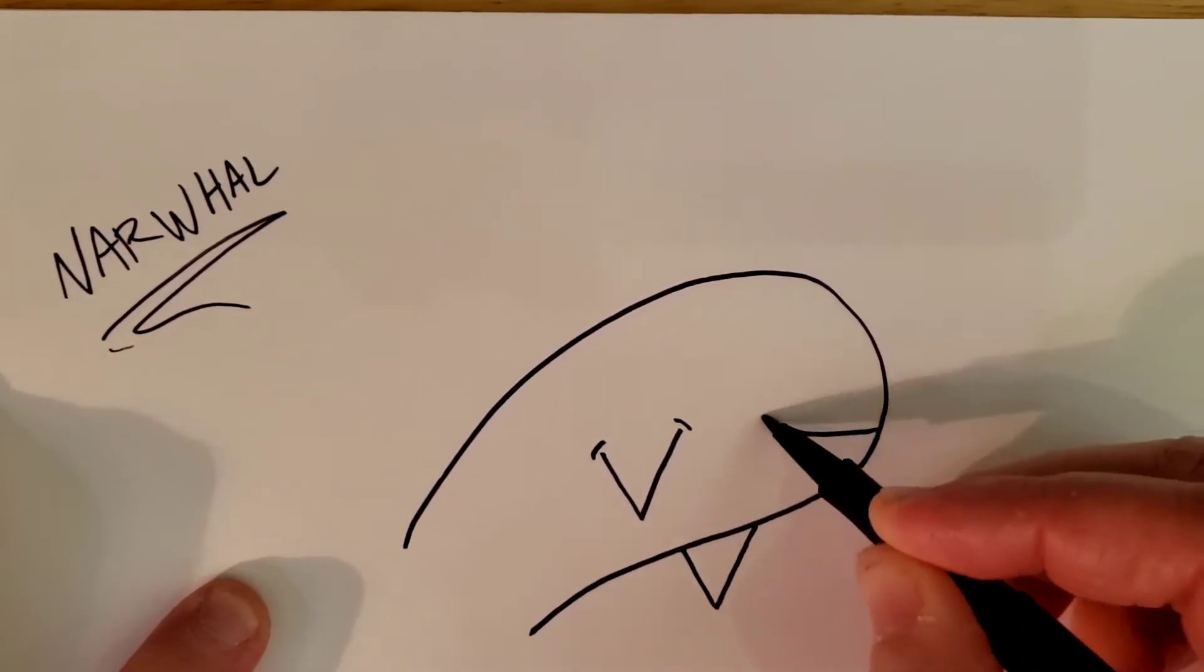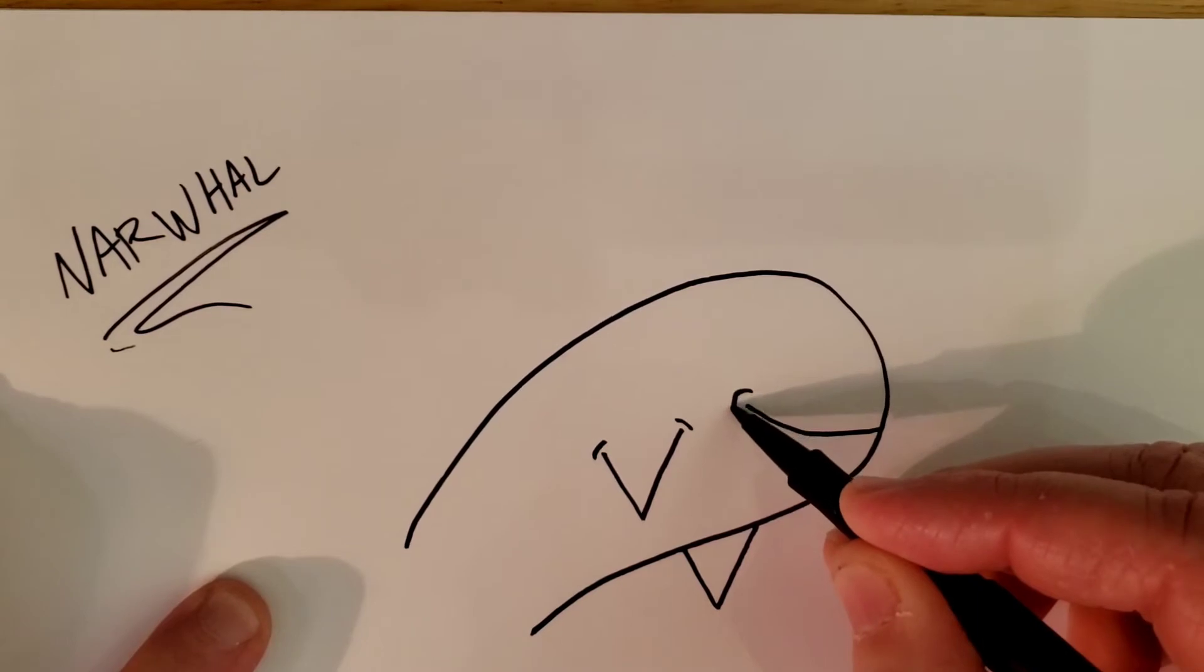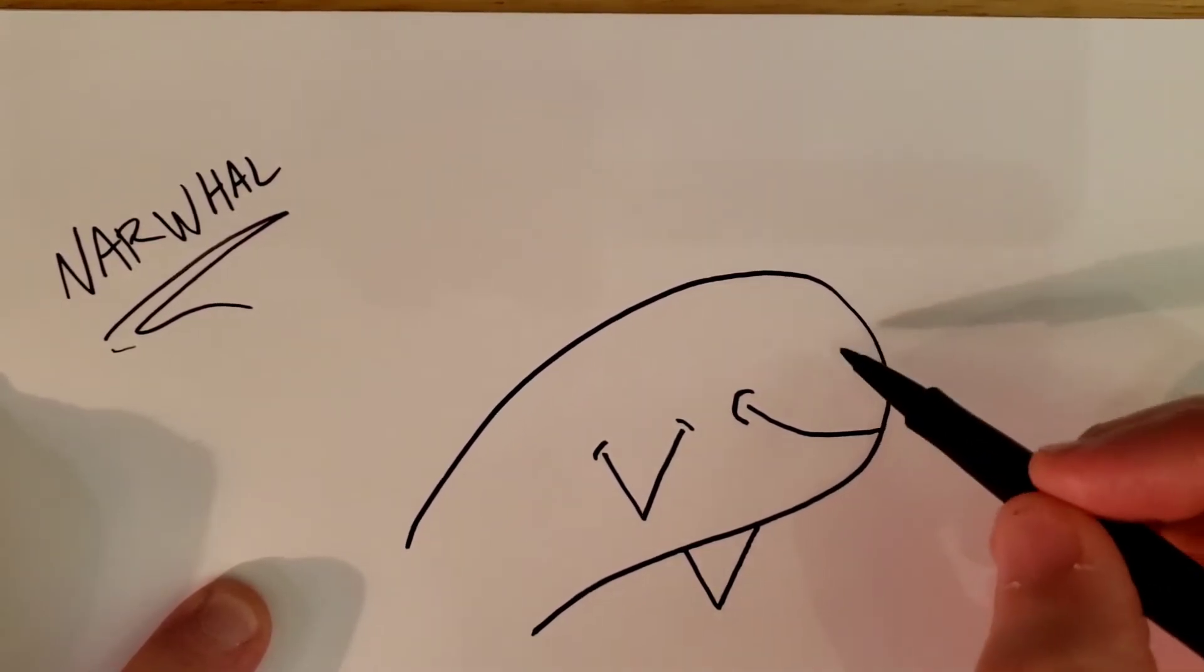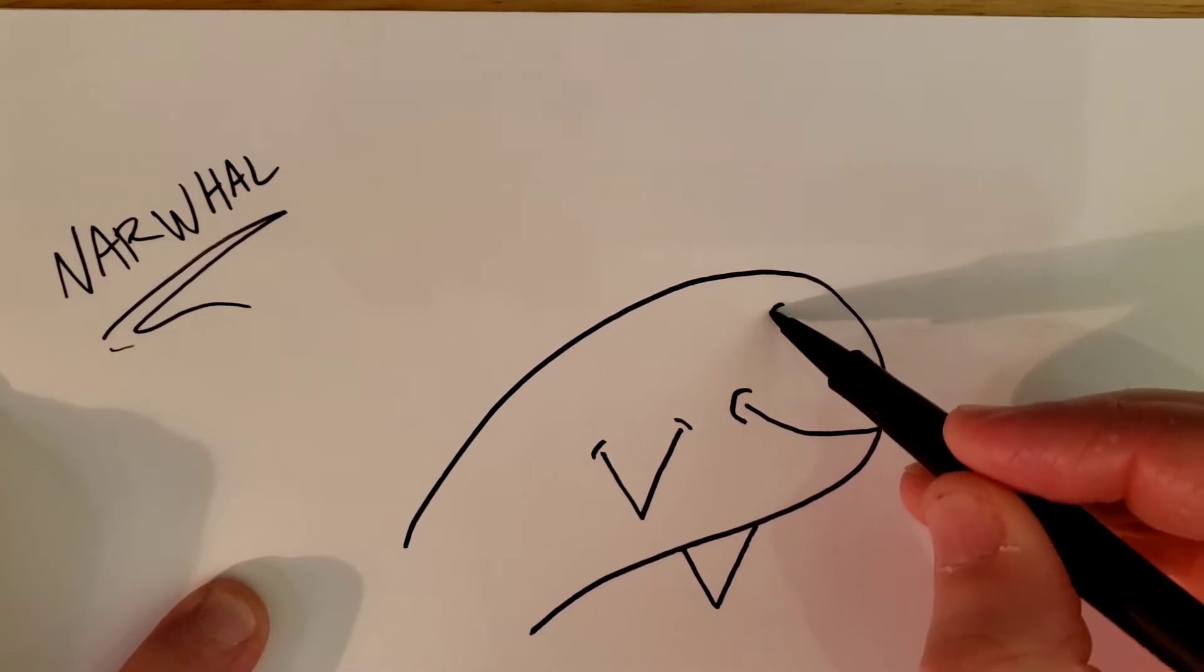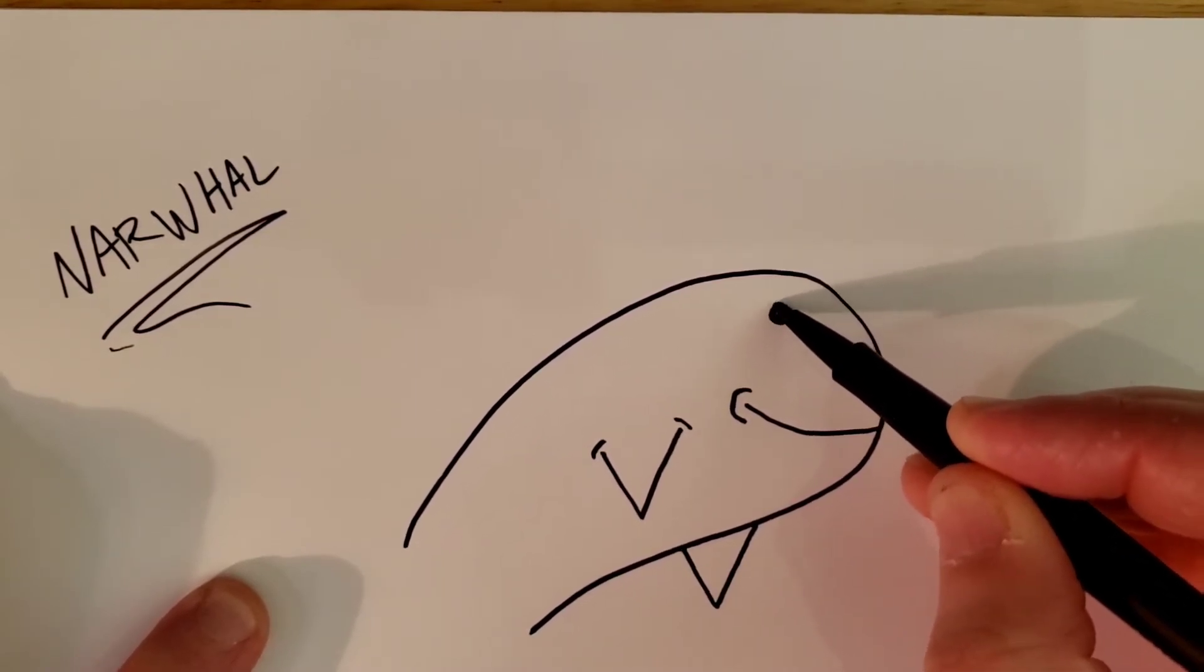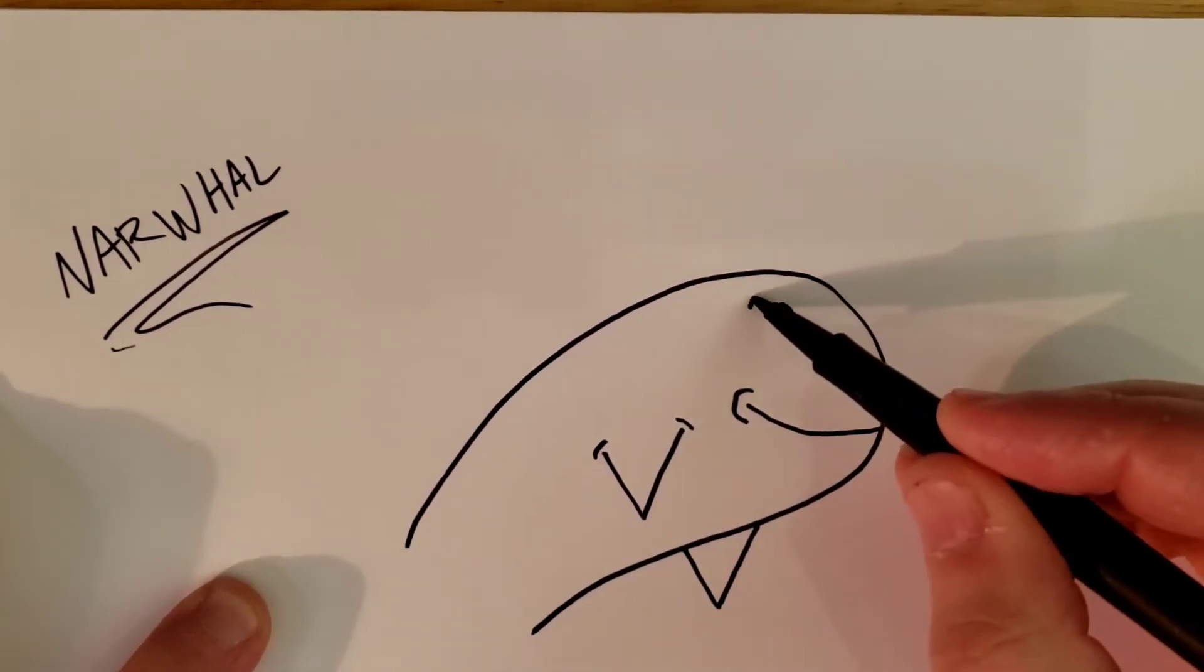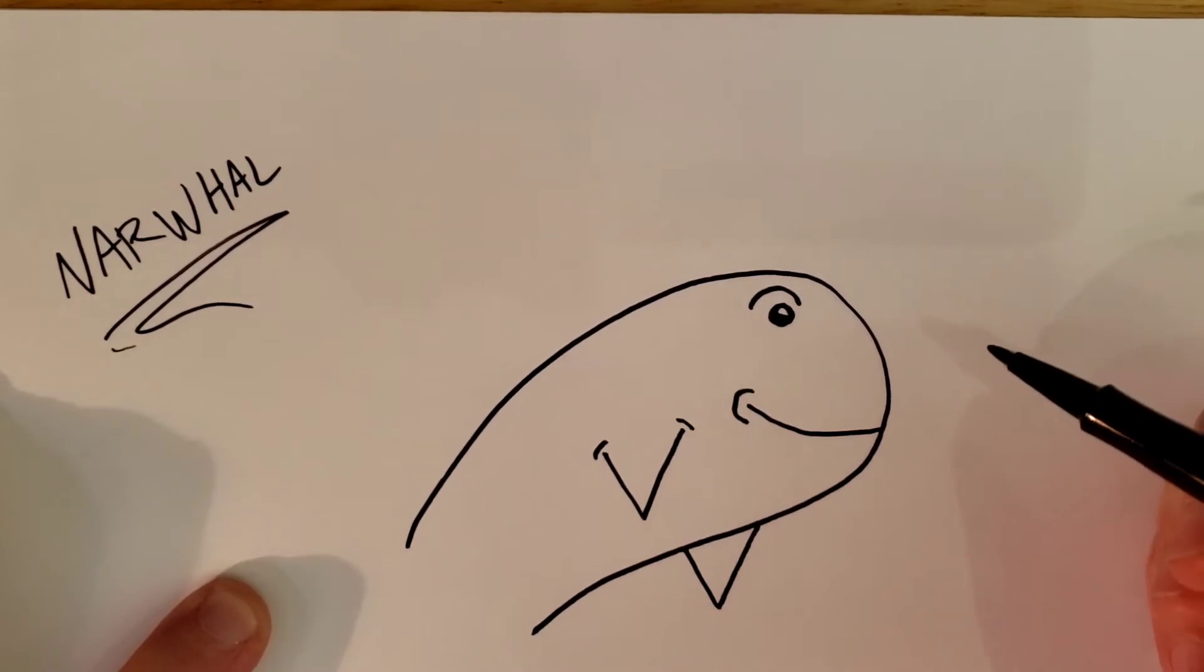We're going to go over here and put a curved line and a little C shape for the mouth. Go up here, draw a circle, color it in, leave a little bit of it white—that's the eye—and curve over the top of it.